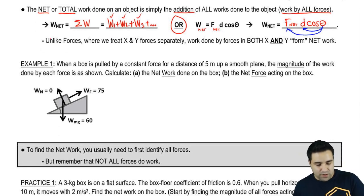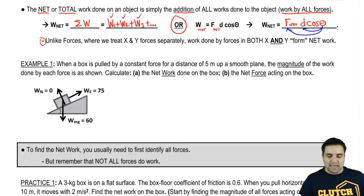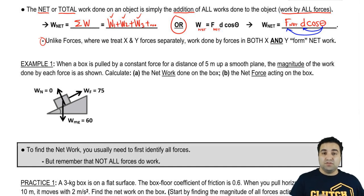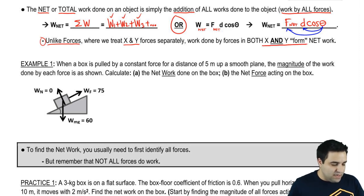One point that's important to make is that work and energy are scalars. They're not vectors, they don't have direction. So unlike forces, where we would treat x and y forces separately because they are vectors, with work we combine x and y to form net work. Let me give you an example. If you have a force 3 going this way and a force 4 going this way, the net force is not 7, but instead it's 5 because it's a vector.